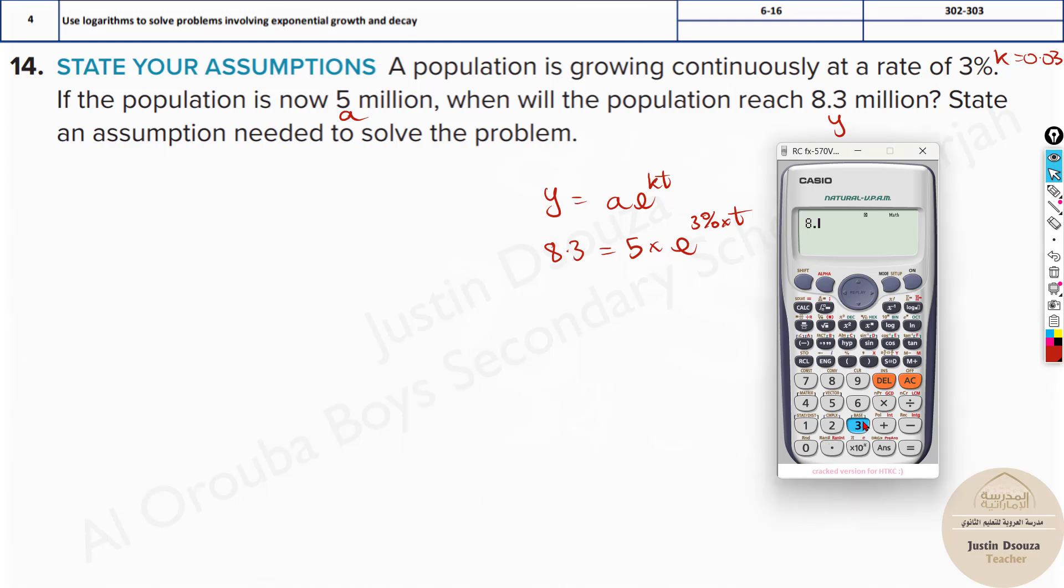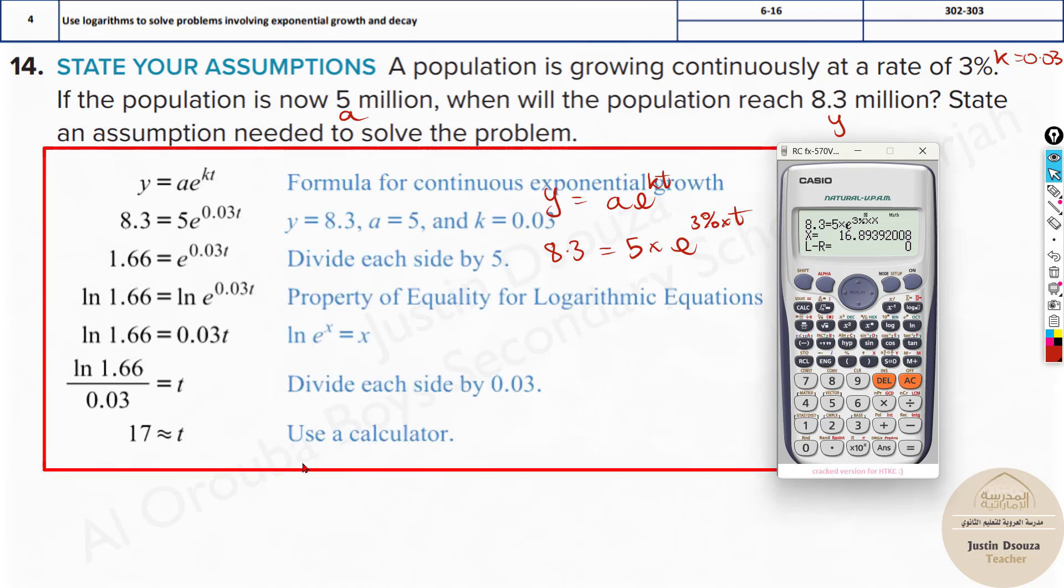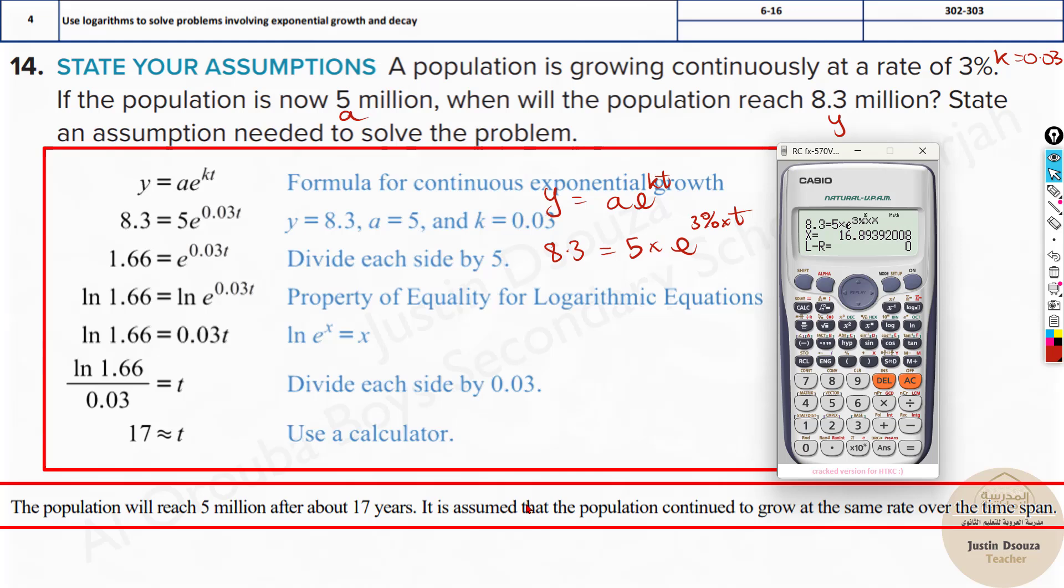Type this equation as it is: 8.3 equals 5 multiplied by e, which is shift and natural logarithm symbol. You can put 3%, shift and this symbol. You can put multiplication and then the variable alpha x. Don't get confused that there are two x's. This is multiplication, then the variable x. Press shift and solve and then equal to. Your answer is 16.89.